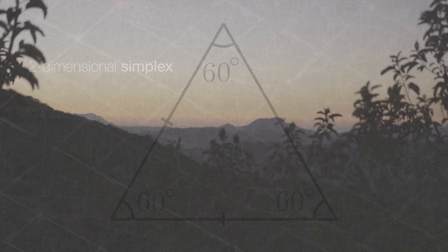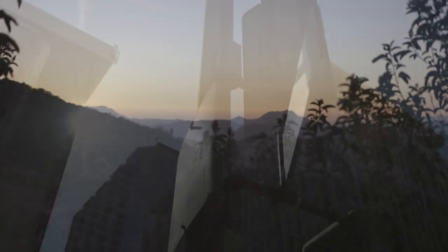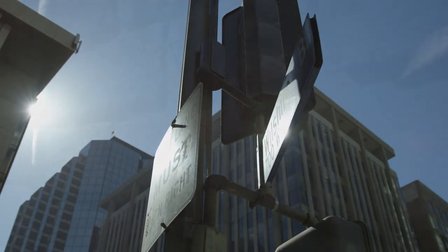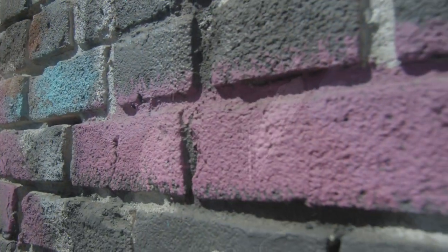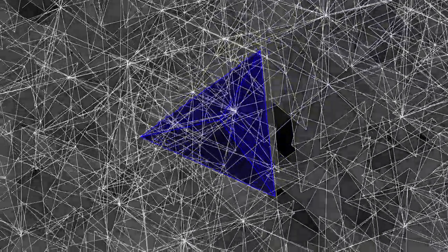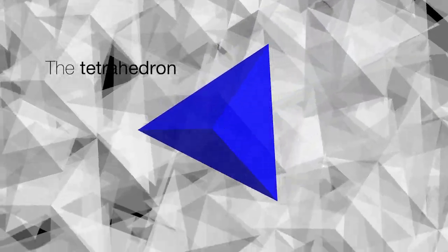Reality seems to be three-dimensional. So if one wondered, what would be the simplest building block of a three-dimensional reality? What's the simplest 3D bit of information? That would be the three-simplex known as the tetrahedron.